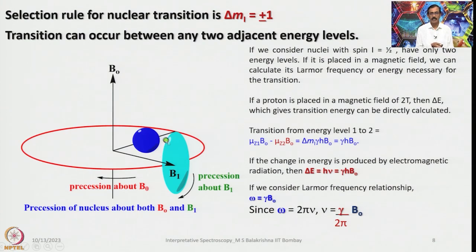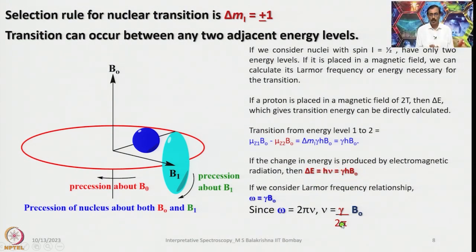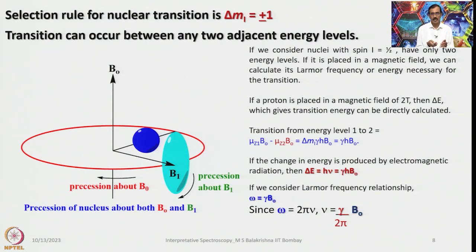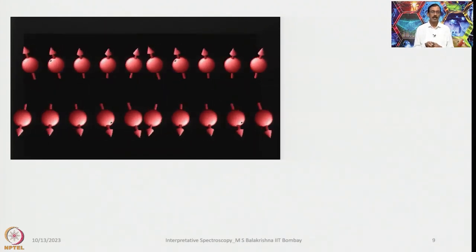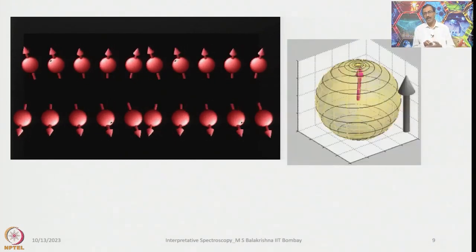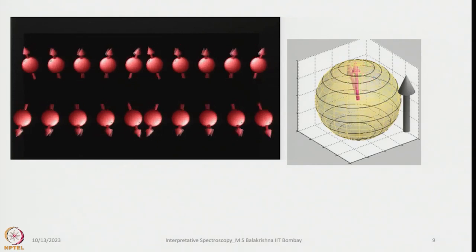Nuclear transition occurs with ΔS = ±1. The frequency with which they precess about the applied field is called the Larmor frequency. Since ω = 2πν, we get ν = γ/2π × B₀ — a very important equation. γ is the magnetogyric ratio, a constant, so ν is directly proportional to the applied magnetic field: increasing the field increases the Larmor frequency, decreasing it decreases the frequency. Radio waves are applied perpendicular to the field to cause flipping.